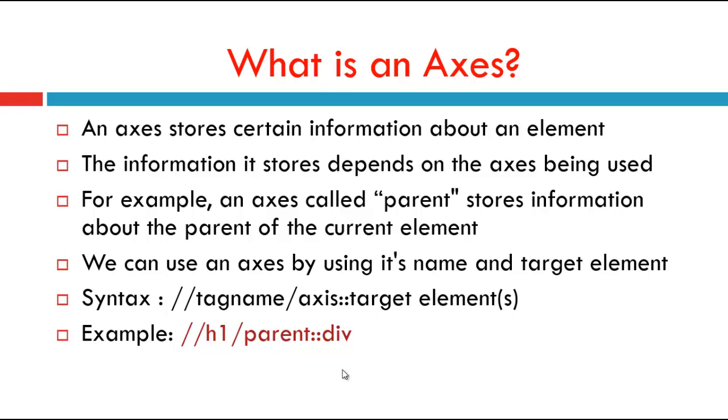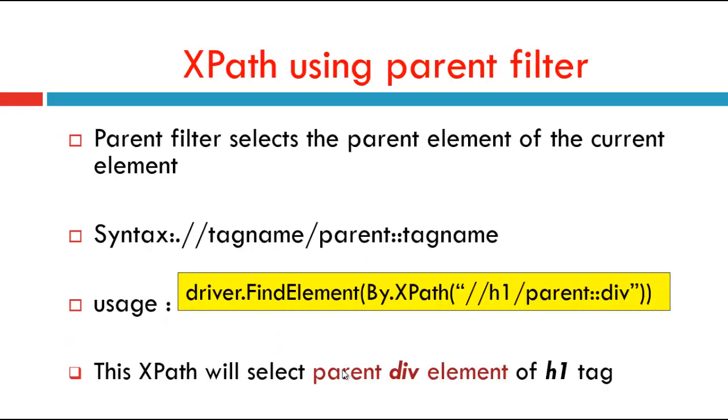We can use an Axis by using its name and target element. The syntax for an Axis is: XPath double forward slash tag name forward slash Axis colon colon target element. For example, double forward slash H1 slash parent colon colon div. Here div and H1 are the tag names.